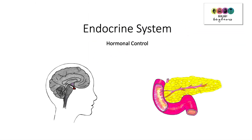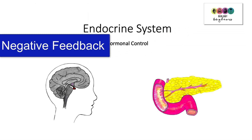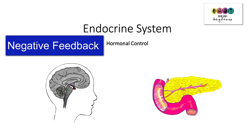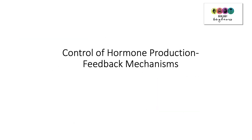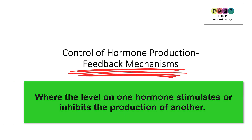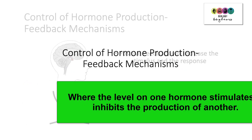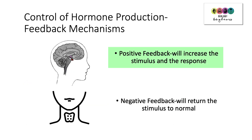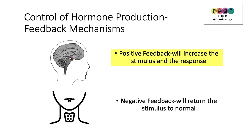In this video we specifically address hormonal control, and in particular negative feedback, which is always the example we give in the endocrine system. However, let's just take a broad overview in case you get a tricky question. Hormone production is controlled by these feedback mechanisms where the level of one hormone will either stimulate or inhibit the production of another. There is positive feedback and there is negative feedback. Let's begin with positive feedback.